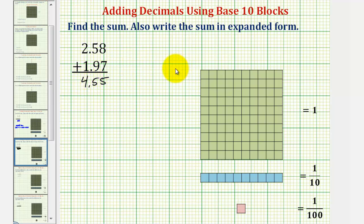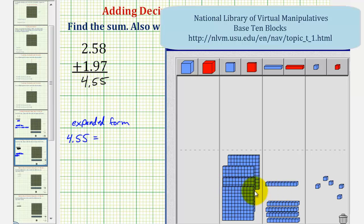But to write this in expanded form, this connects more directly to what we found using our base ten blocks. Going back to our blocks again, four and fifty-five-hundredths is equal to four plus five-tenths plus five-hundredths.